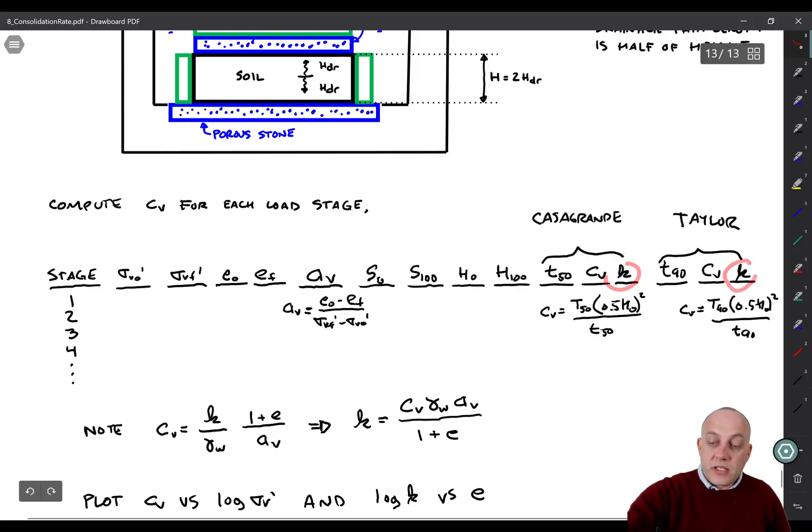Then you can calculate hydraulic conductivity as well. The way you do that is to go back to our fundamental definition of C sub V. Another thing that's often confusing for students is that when we calculate C sub V from lab testing, we're actually using the fundamental definition of time factor. Big T is equal to C sub V times lowercase T over HDR squared. We've inverted it, so C sub V is then equal to big T HDR squared over lowercase T. What we can do is go back to our fundamental definition of C sub V, and then we can solve for hydraulic conductivity K. K is equal to C sub V gamma W, A sub V over 1 plus E, and we have all of those things computed now so we can get hydraulic conductivity.